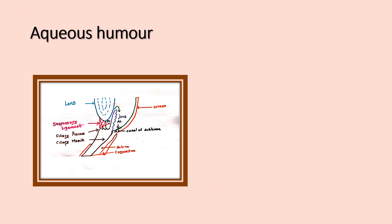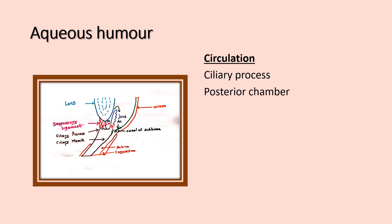The aqueous humor is formed from the ciliary process and enters into the posterior chamber. Then, through the pupil of the eye, it flows to the anterior chamber.